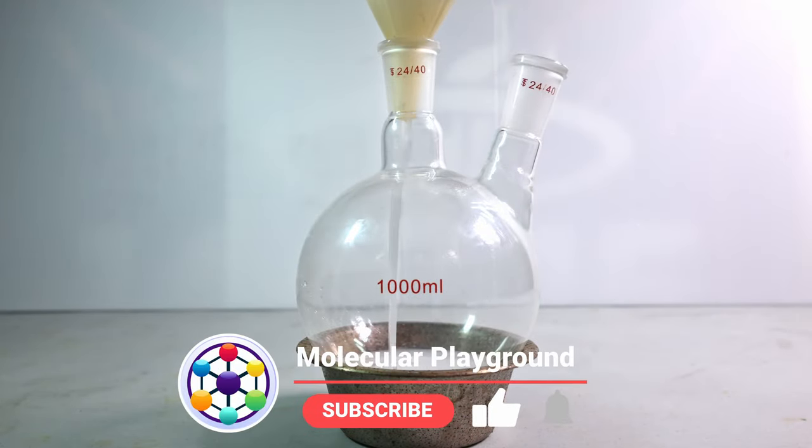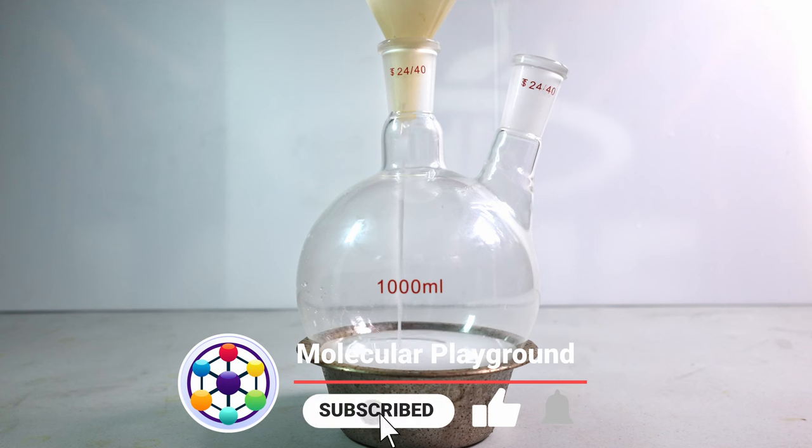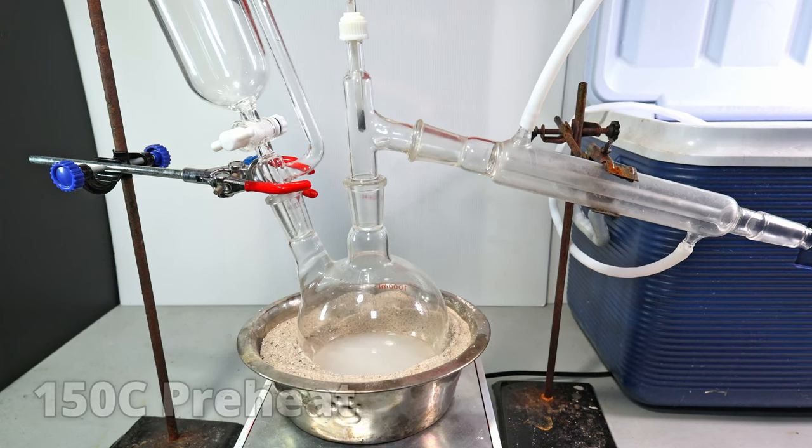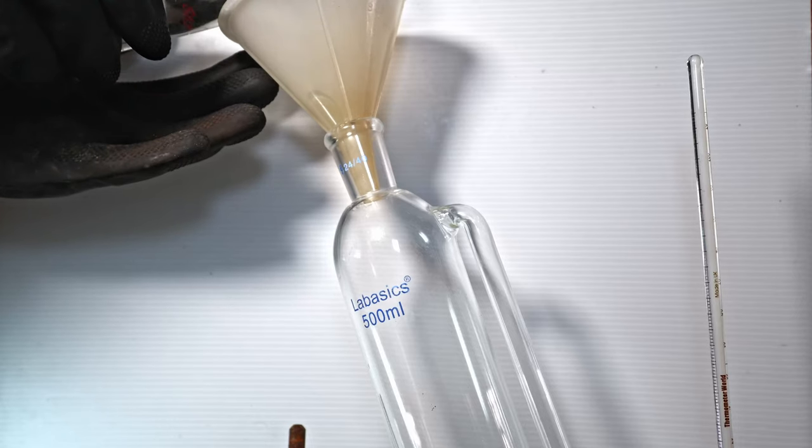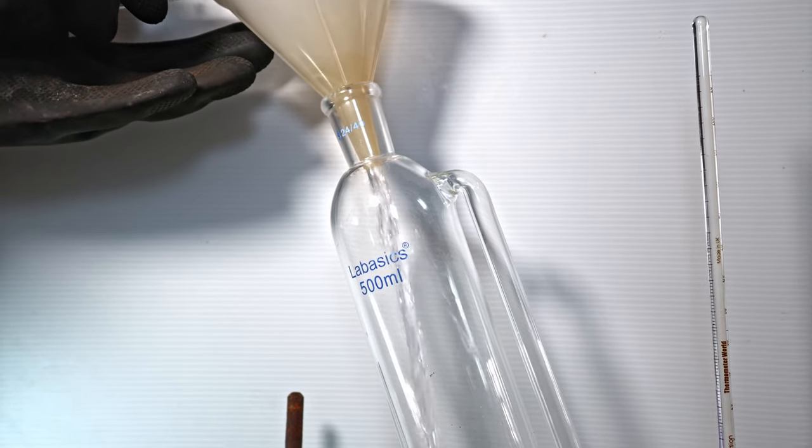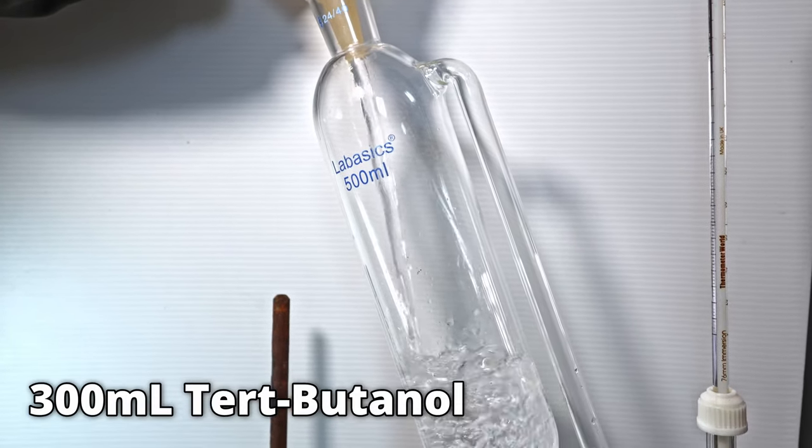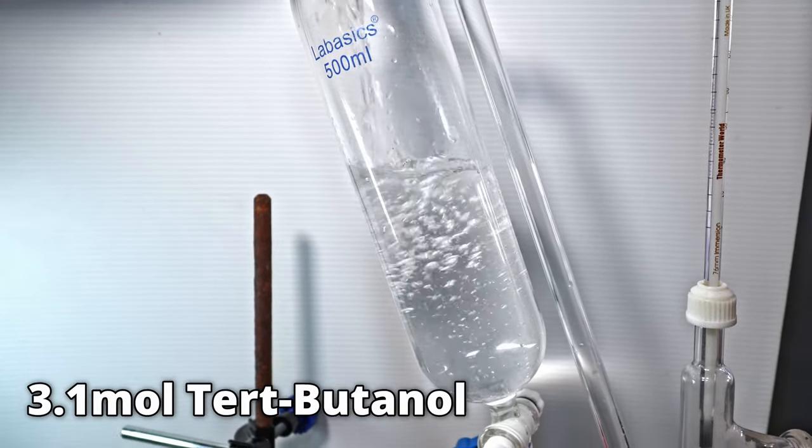I'm going to add this to a two-necked flask. Before I add in the tert-butanol, I'm going to heat the acid up to 150 C. In an addition funnel, I'm going to add an initial 300 milliliters of tert-butanol. That is roughly 3.1 moles of tert-butanol.